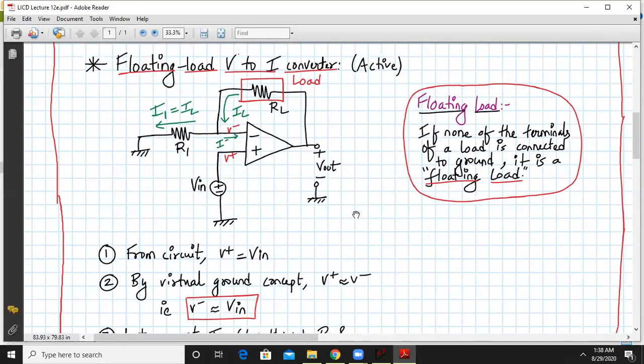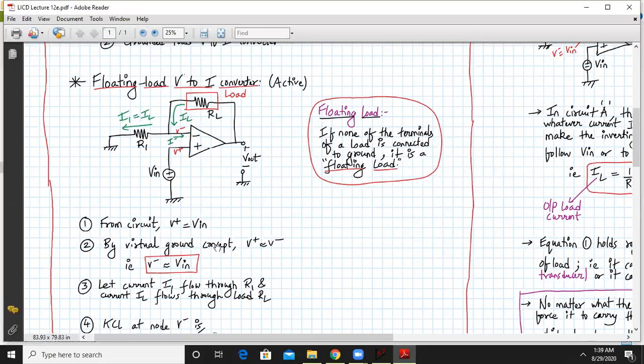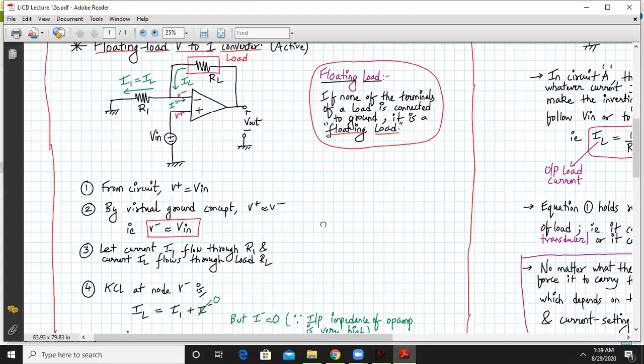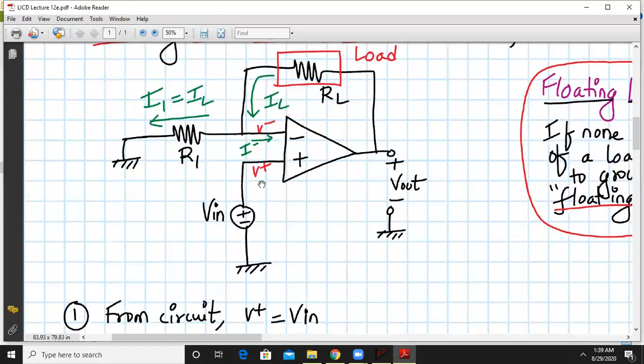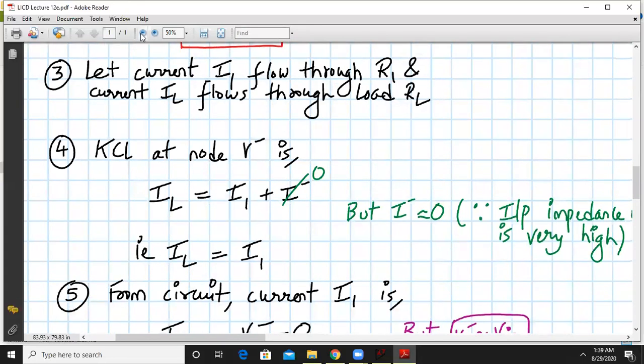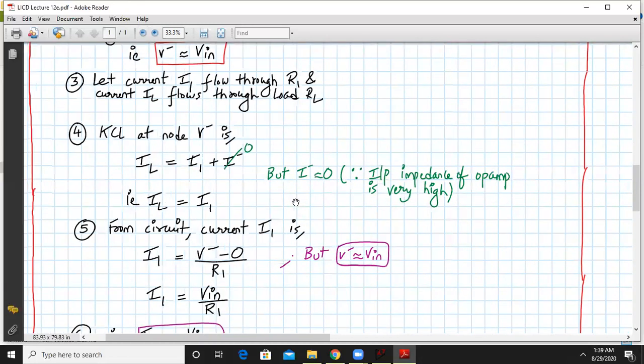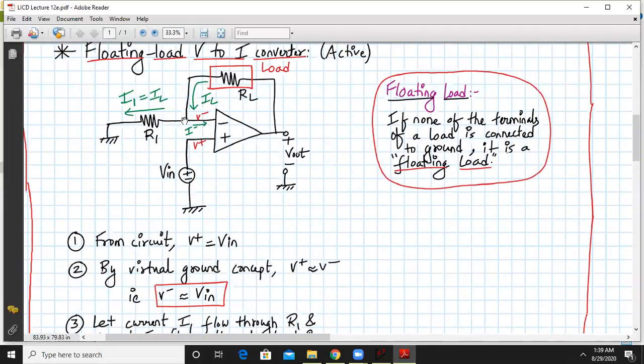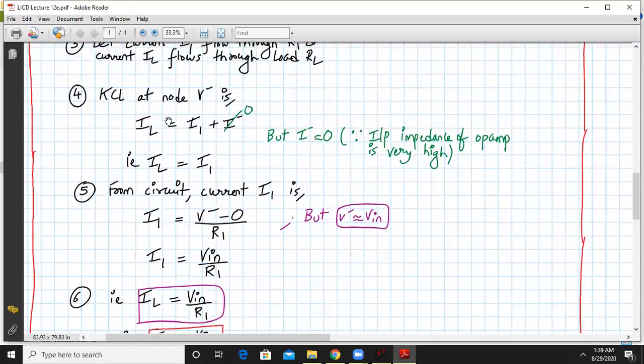Let us start with the analysis. From the circuit we can write V+ equals VIN. By virtual ground concept, V- is also approximately equal to VIN. Let I1 be the current flowing through R1 and IL be the current flowing through RL. We will apply KCL at this node V-. KCL says incoming current equals outgoing currents, so IL equals I1 plus I-.